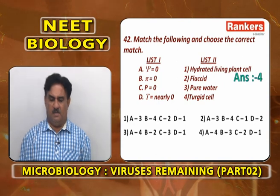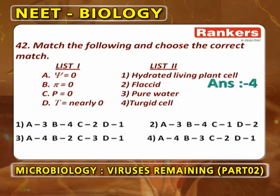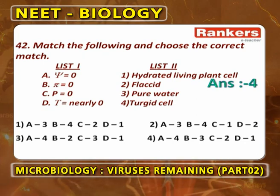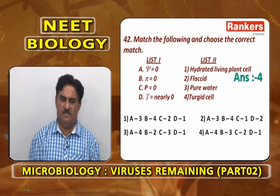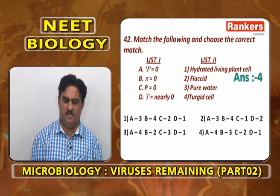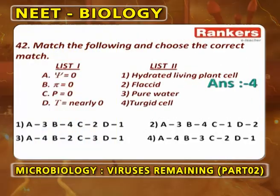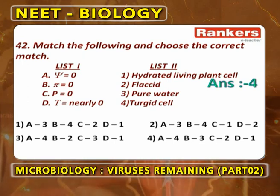A is 4: psi = 0 in a fully turgid cell. Pi = 0 in pure water — in pure water, osmotic potential is 0. P = 0 in a flaccid cell, a completely plasmolyzed cell where pressure potential is completely 0. Tau is nearly 0 in a hydrated living plant cell. So A4, B3, C2, D1. Fourth option.